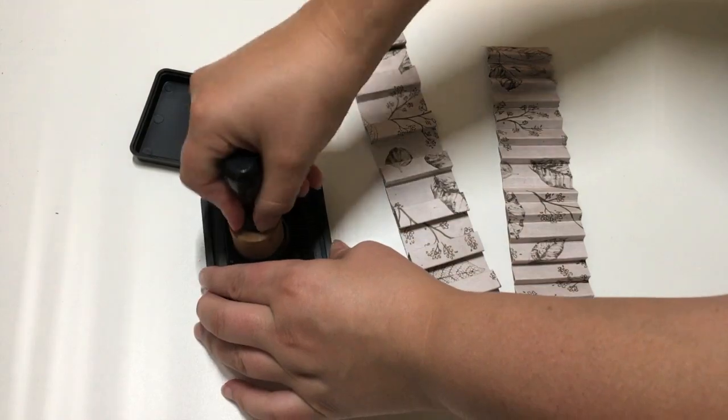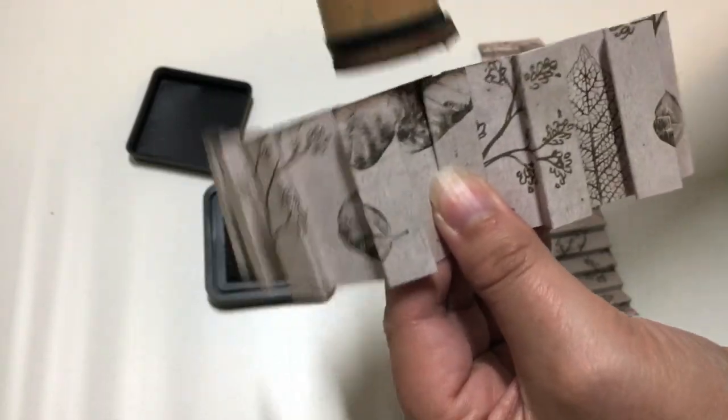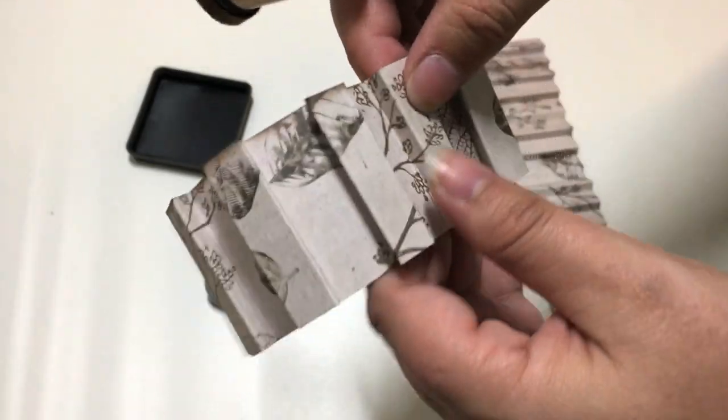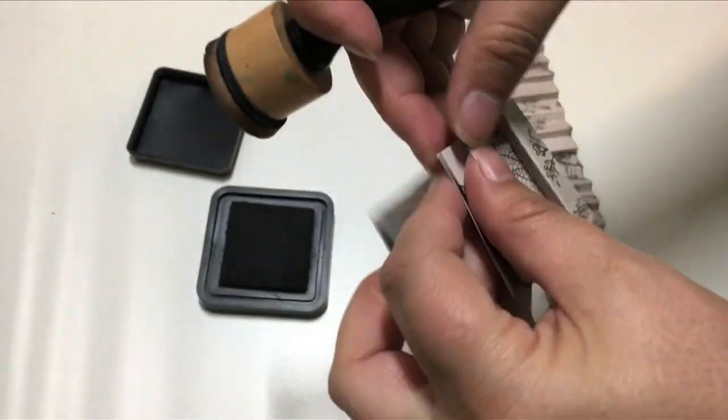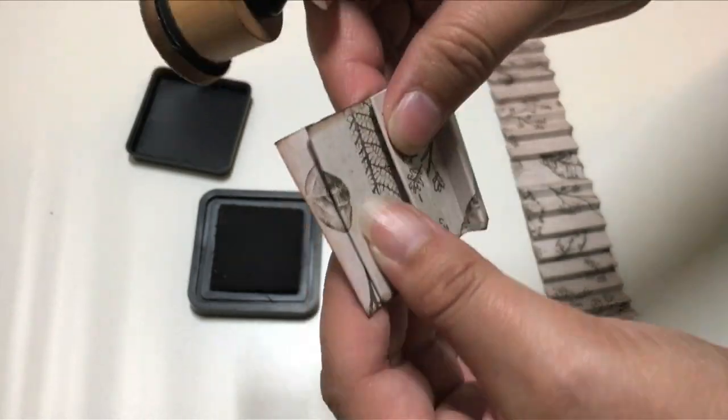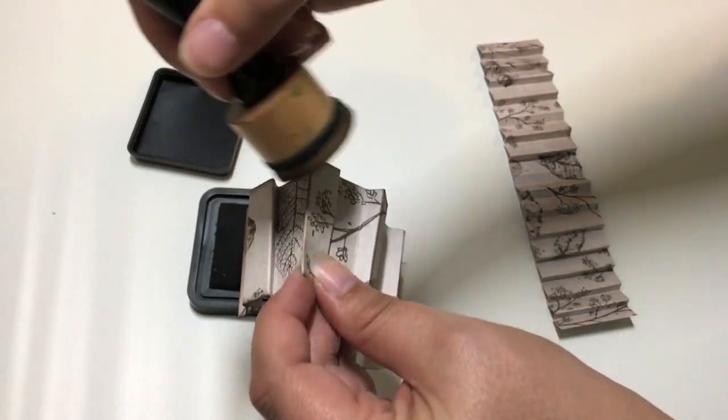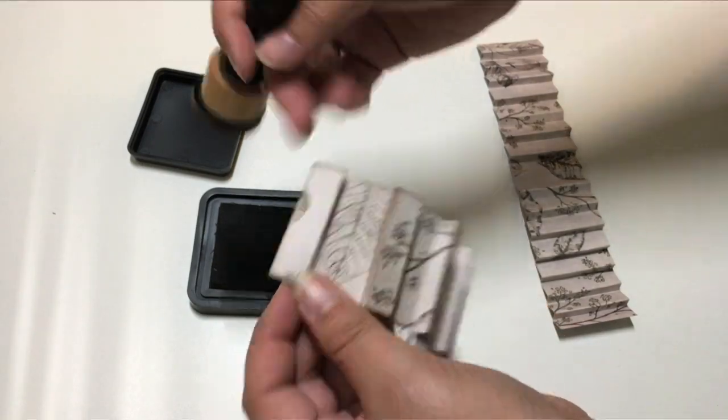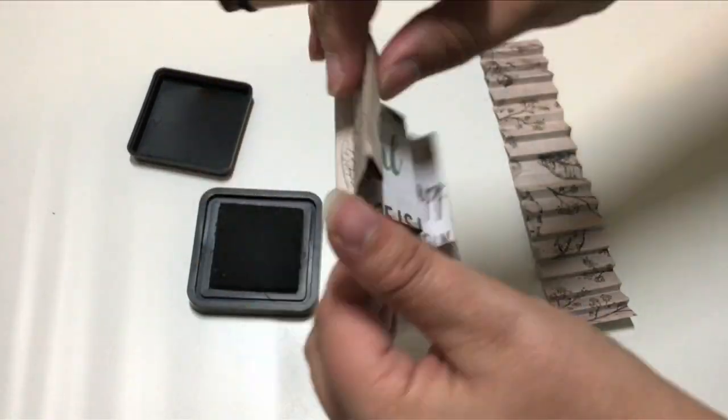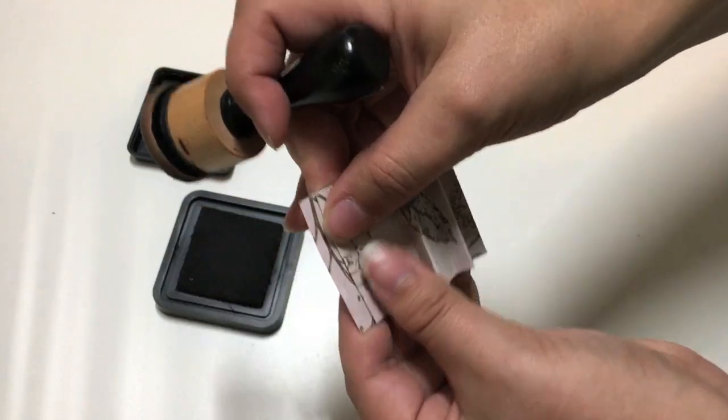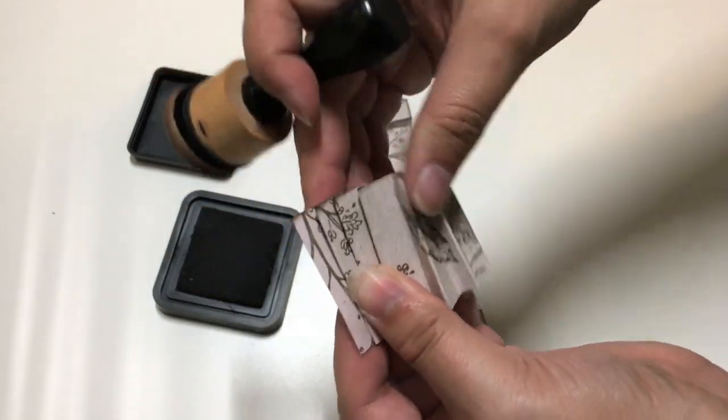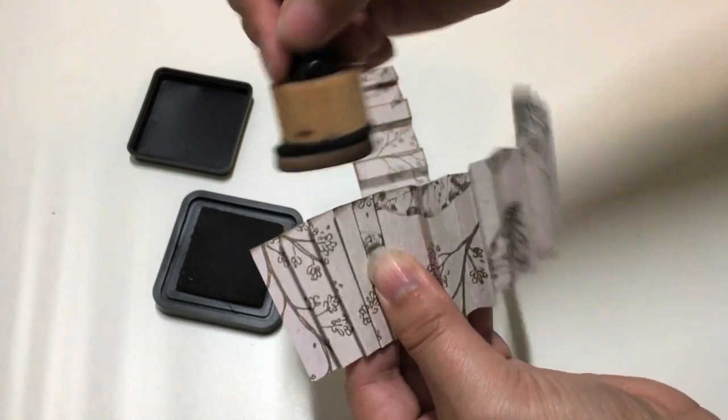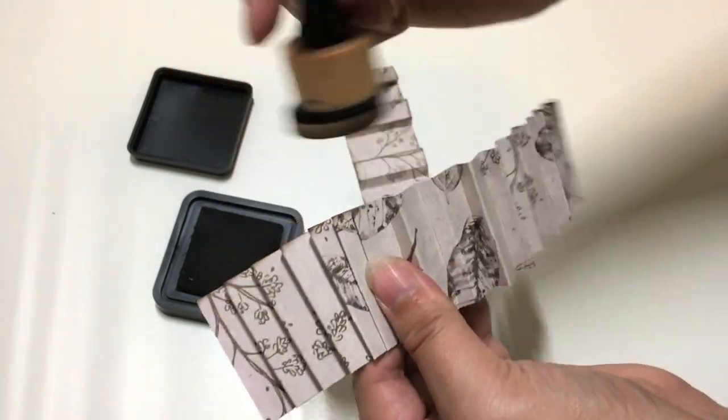It's always fun to add a little distress ink or chalk ink to the edges just to give it a little bit more dimension. Just ink up all the different edges, the sides, and then I'll be doing the creases of the pleats as well. I'm doing the same with the other pleat, just making sure it's pleated the way I want it as I'm inking it.